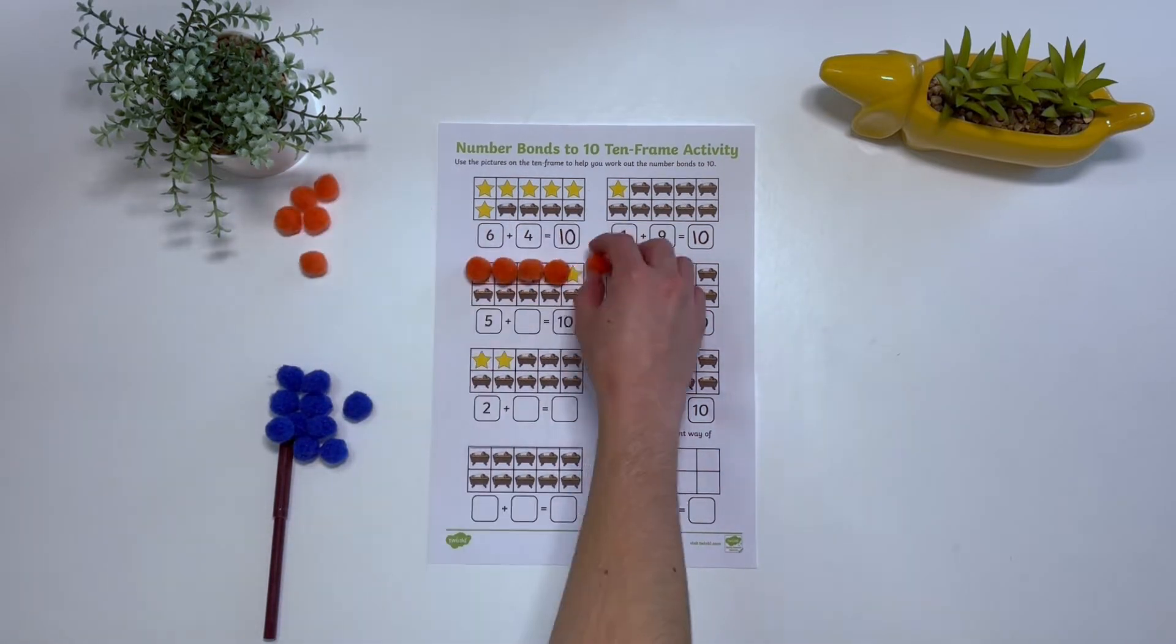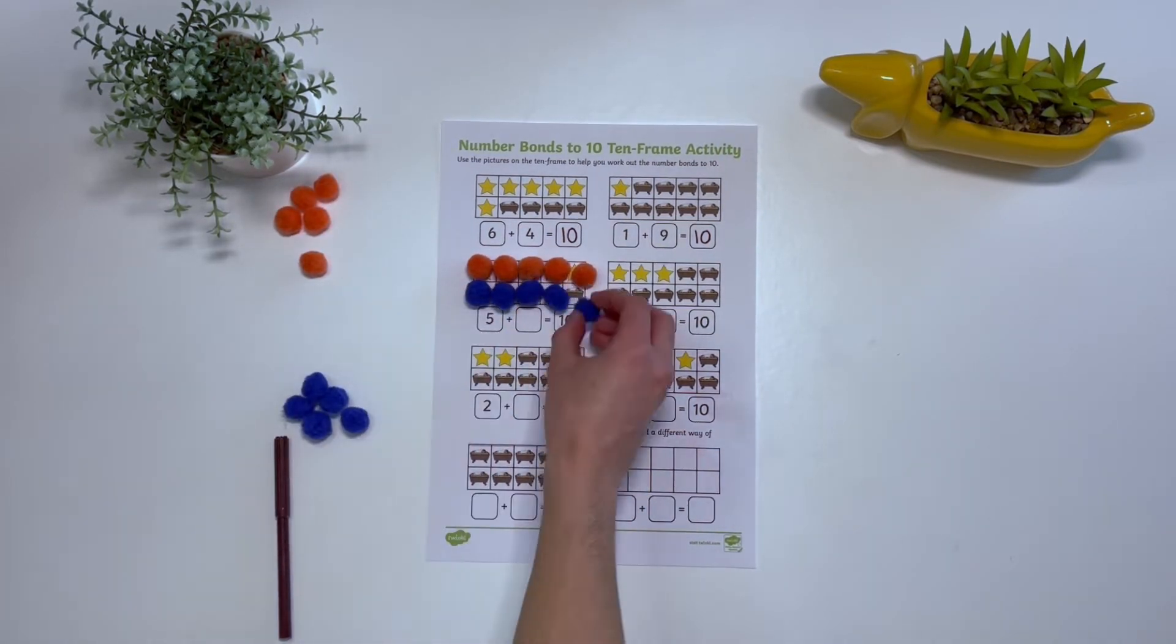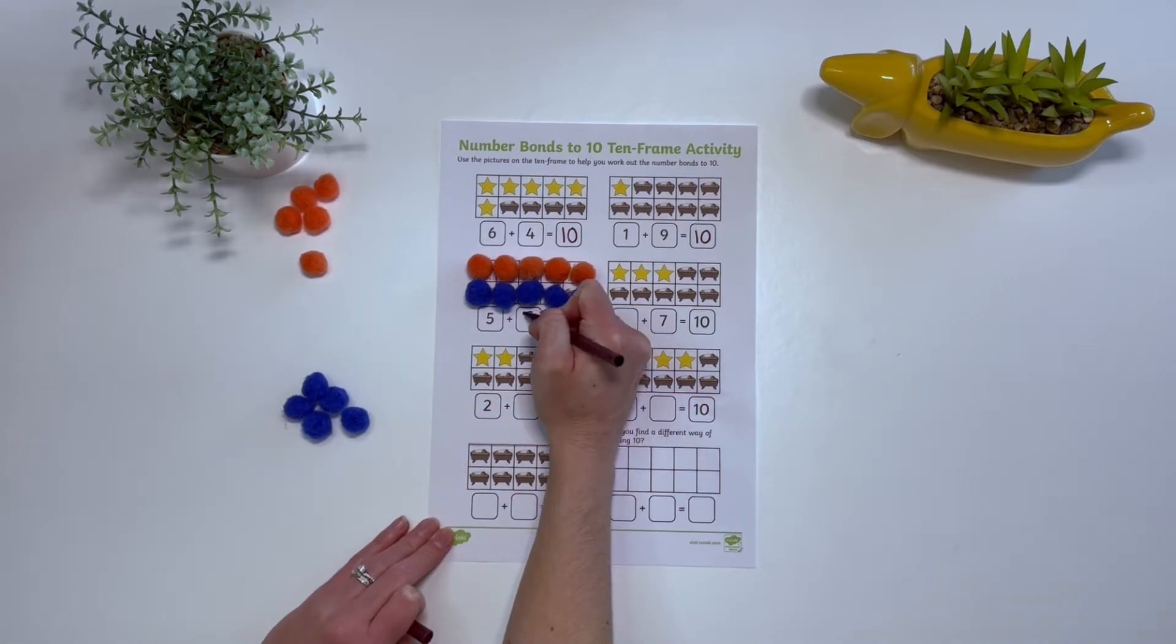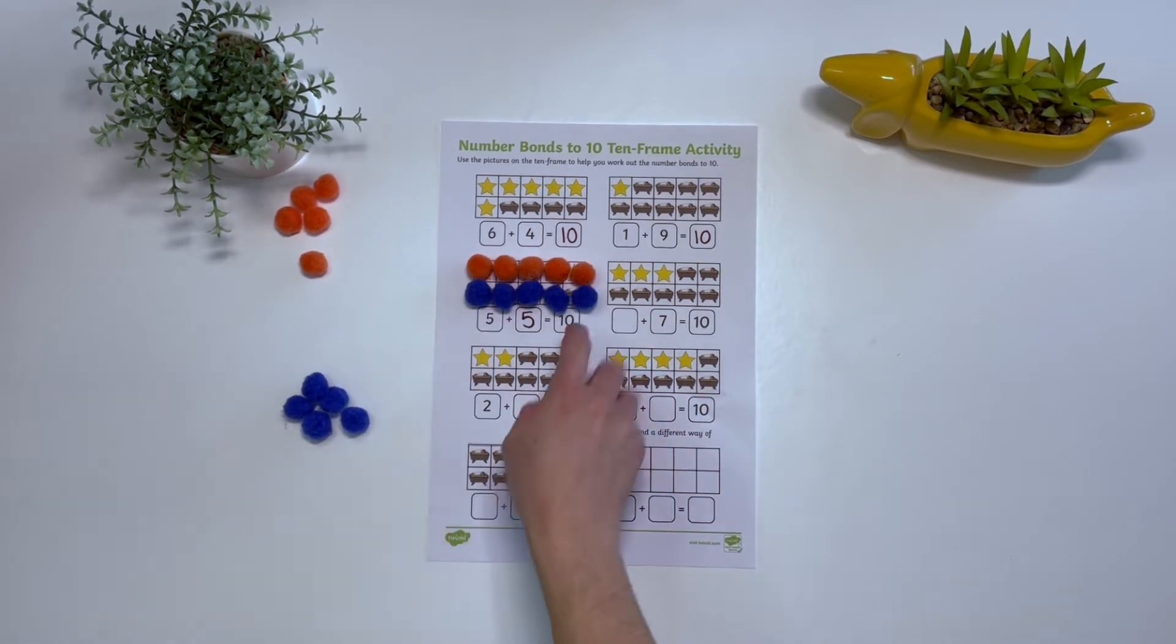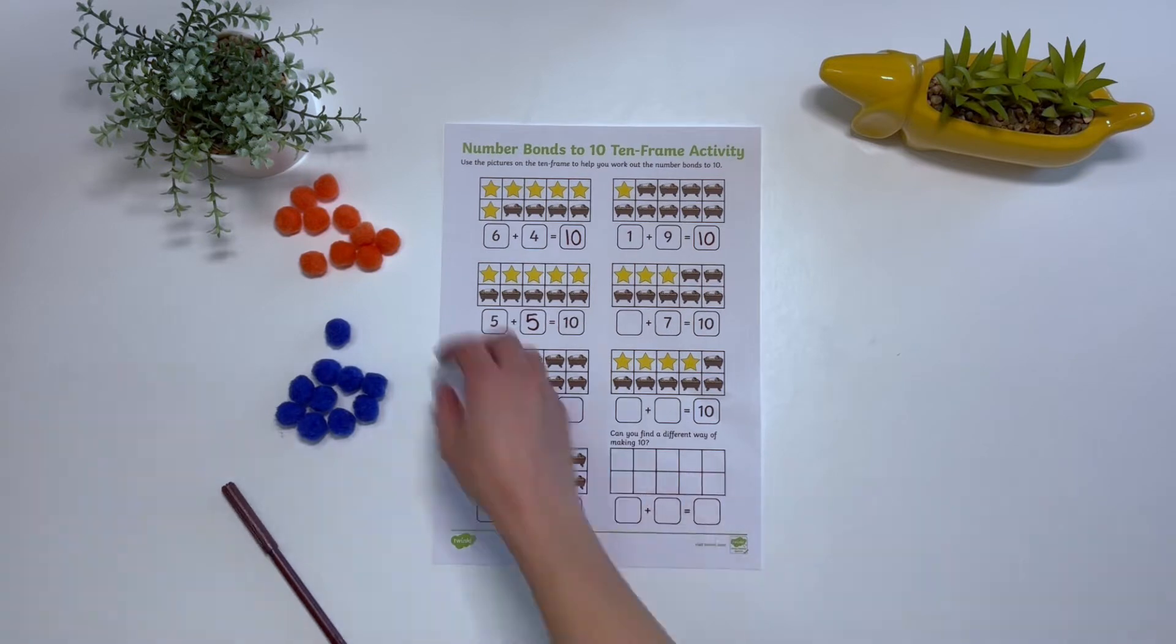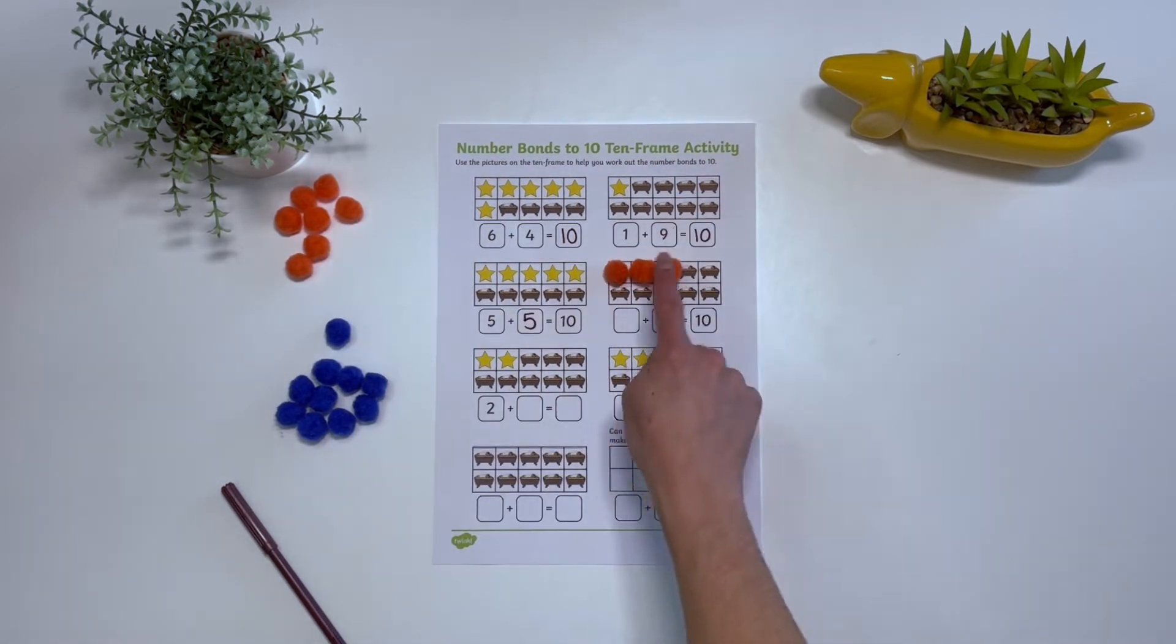You could give children two sets of different colored pom-poms or buttons. Can they place them over the top of the pictures? They can count up how many of each there are to find the missing numbers.